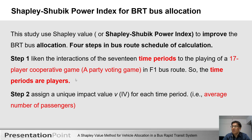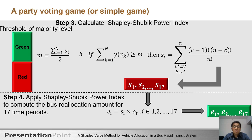Step 1: Select the interaction of the 17 time periods to plan a 17-player cooperative game — that is, a party boarding game in the F1 BRT route. So the time periods are the players. Step 2: Assign a unit impact value V, that is, the average number of passengers for each time period.